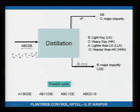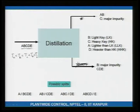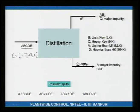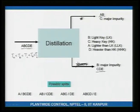Alternatively, components A and B can go up the top and C, D, E down the bottoms. Here the next close-boiling component to B is C, so C will be the major impurity at the top, and B will be the major impurity at the bottom.